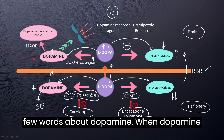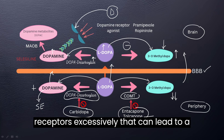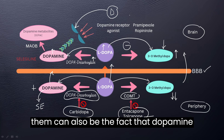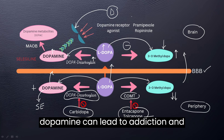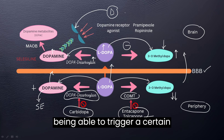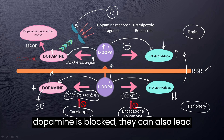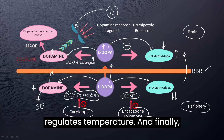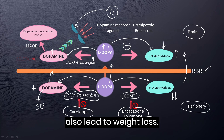When dopamine is in excess and stimulates dopamine receptors excessively, that can lead to a number of side effects: dyskinesia or movement disorders; addiction, since dopamine is a pleasurable substance; psychotic features; and vomiting, as dopamine can trigger the chemoreceptor trigger zone. When dopamine is blocked, it can also lead to a hypothermic state because dopamine regulates temperature. Excess dopamine stimulating receptors excessively can also lead to weight loss.